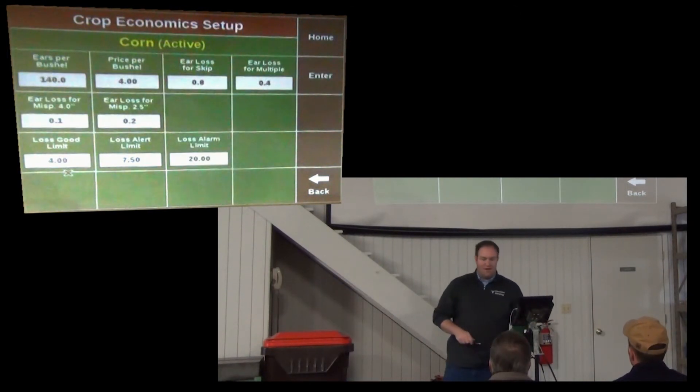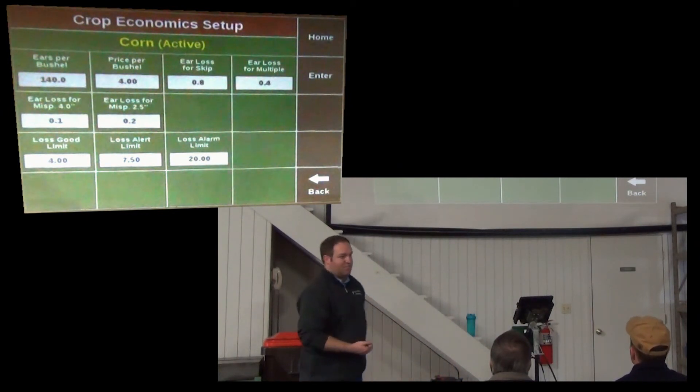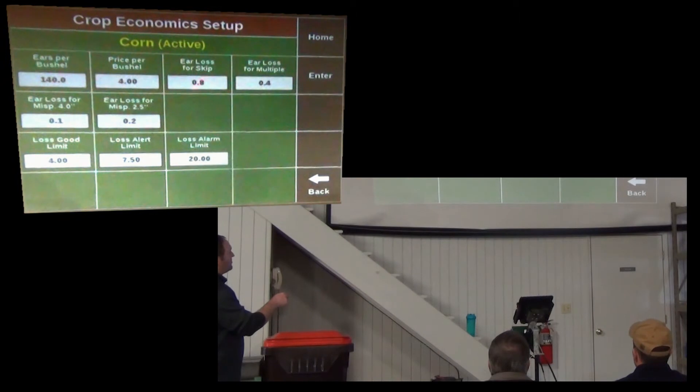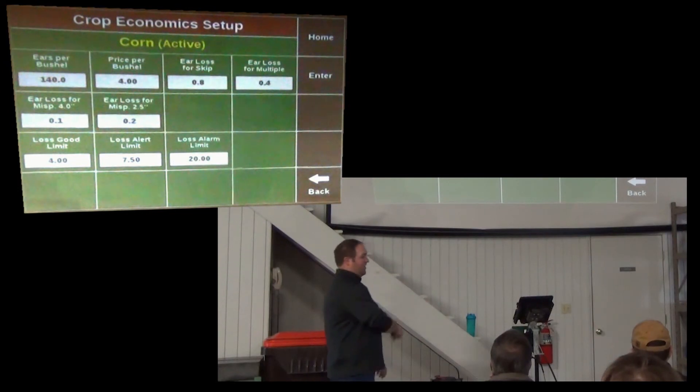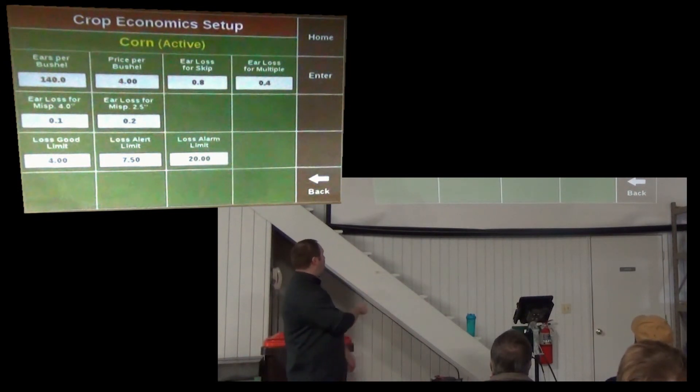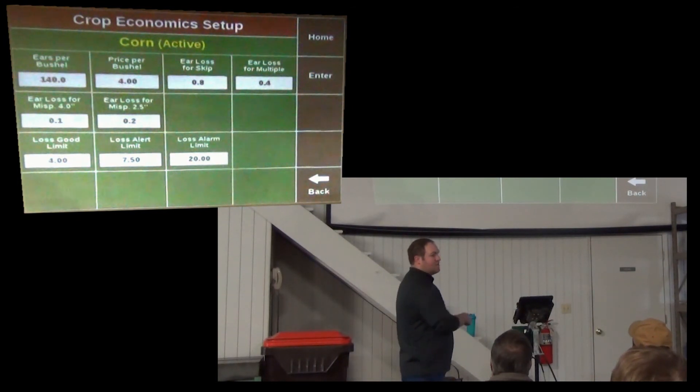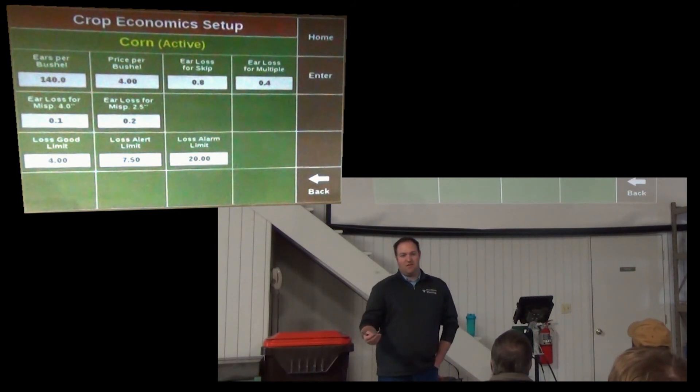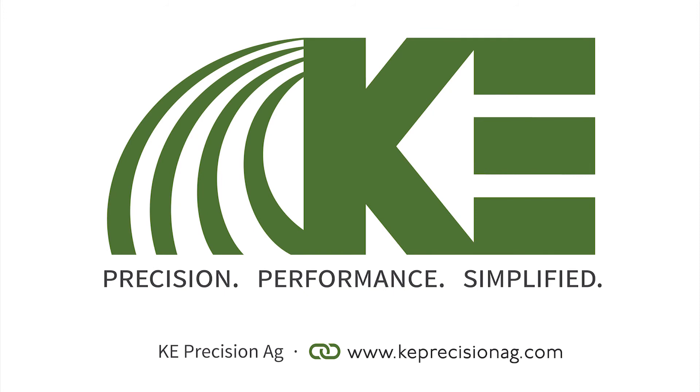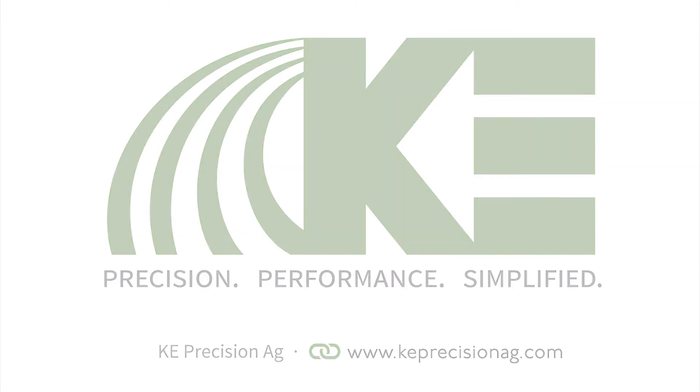Down in the bottom left, economic adjustments. Here is what determines what the loss per acre box is showing you. So your loss per skip is 80% here, 40% for multiple, 10% here within 4 inches, 20% within 2.5. Here's your price per bushel. Put a good price per bushel in there if you have that loss per acre button showing. And then basically down here, up to $4 loss, it's going to say good. And then it's going to turn different colors as it gets above that $4. If you put this $4 loss limit good at zero, it's always going to give you a dollar figure. It'll never say good.